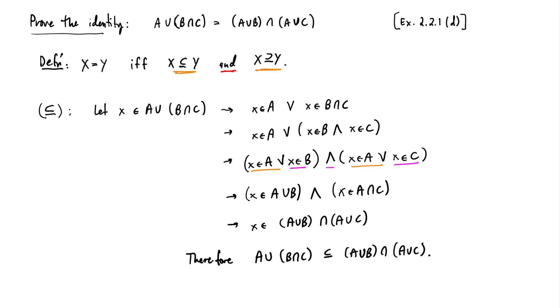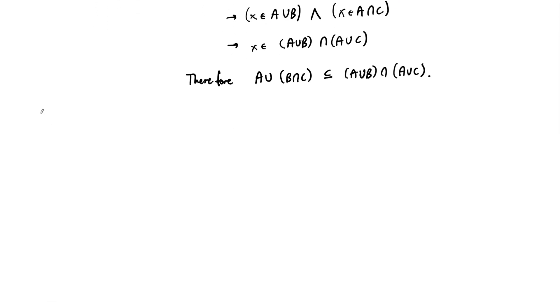So what we've shown then is that A union B intersect C is contained in, it's a subset of, A union B intersected with A union C. We now need to show the other direction though, so we're not done.